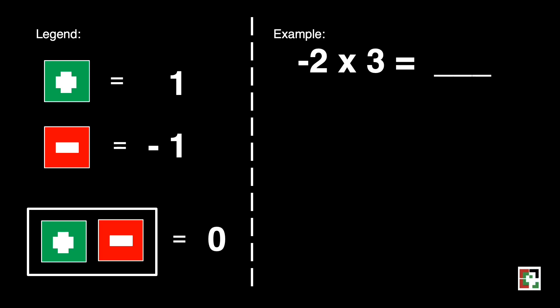What if our example is this, negative two times three. It means we have to remove two sets of positive three. We'll be using zero pair to explain this question.